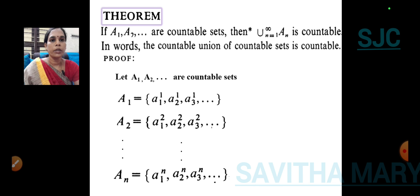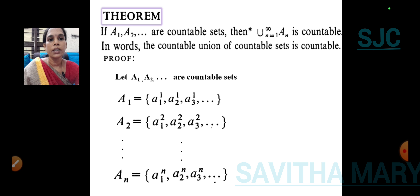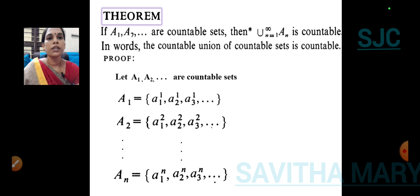Let us take the set A1 and it has some elements, identified as A1 superscript 1, A2 superscript 1, and A3 superscript 1. The subscript represents the place value — that is, the first element, second element, third element, and so on. The superscript number 1 represents which set the element belongs to. So, an element belonging to the first set is written as Ak superscript 1.